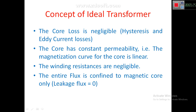The concept of ideal transformer: as discussed, the losses are negligible. The main losses are core loss, resistive drop, and reactance drop — all these things will be neglected in the ideal transformer.